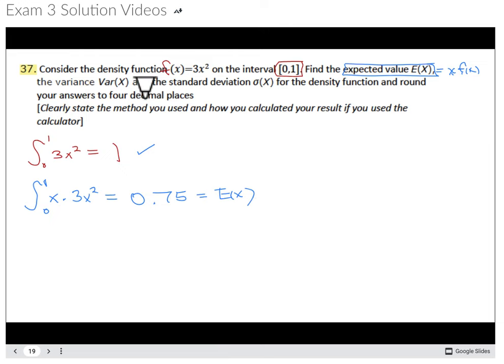And then the next thing we'll do is we'll get our variance. And for our variance, come down here. What we're going to need is we go from 0 to 1. And then we want to take x minus the mean, in this case 0.75. So that's why we had to calculate it first. We're going to square it. And then we multiply it by the function f of x, which is 3x squared.